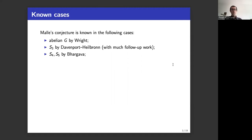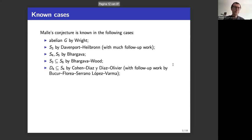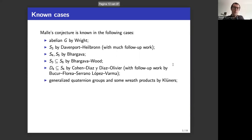S4 and S5 — quartic S4 extensions and quintic S5 extensions — were done by Bhargava in two well-known papers. Galois S3 extensions (degree-6 S3) were counted by Bhargava and Wood. Quartic D4 extensions were done by Cohen, Diaz y Diaz, and Olivier, with follow-up work by Bučur, Florea, Serrano López, and Varma.